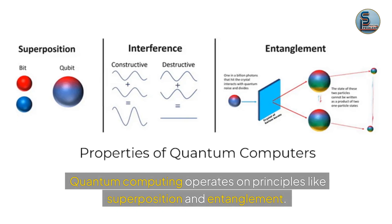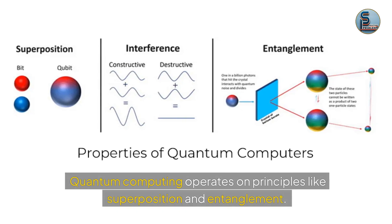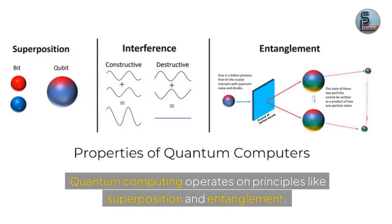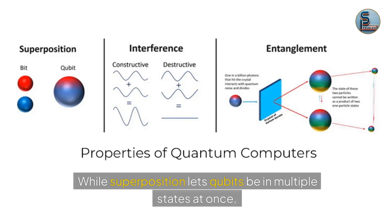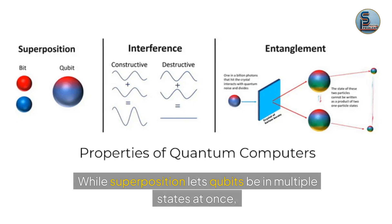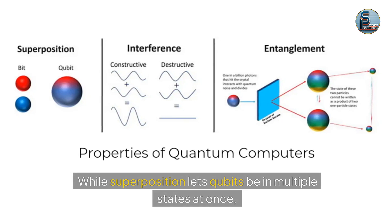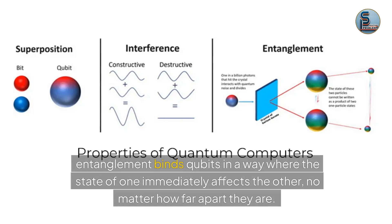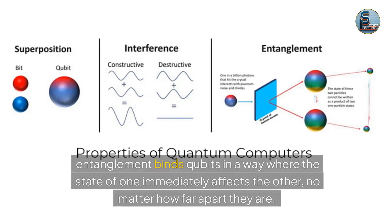Quantum computing operates on principles like superposition and entanglement. While superposition lets qubits be in multiple states at once, entanglement binds qubits in a way where the state of one immediately affects the other, no matter how far apart they are.